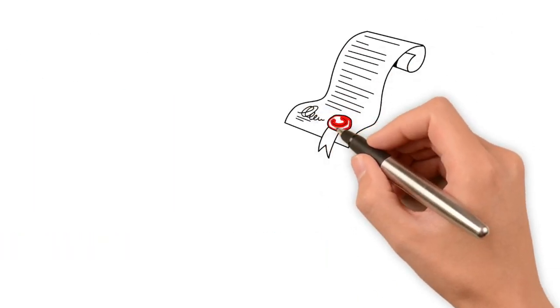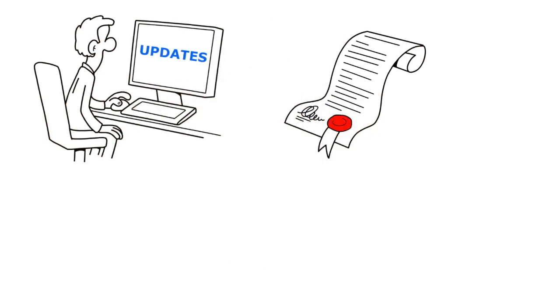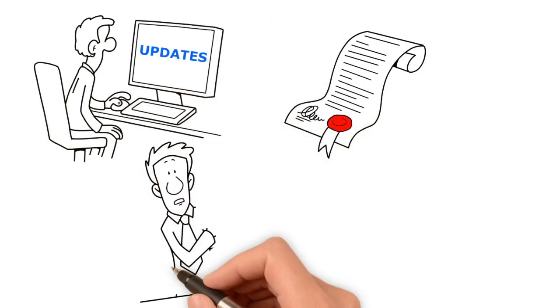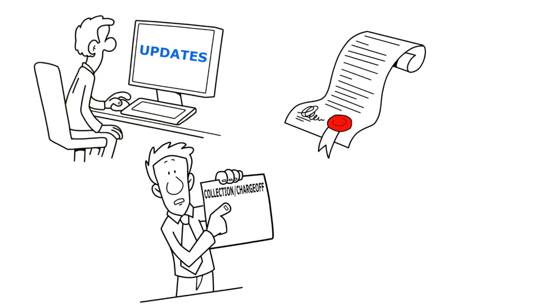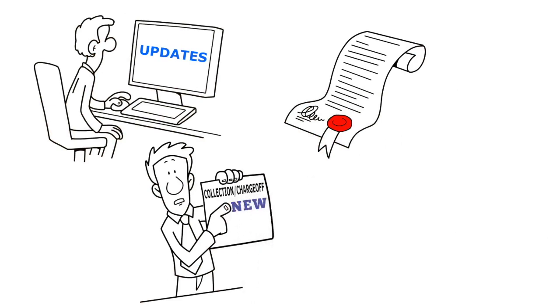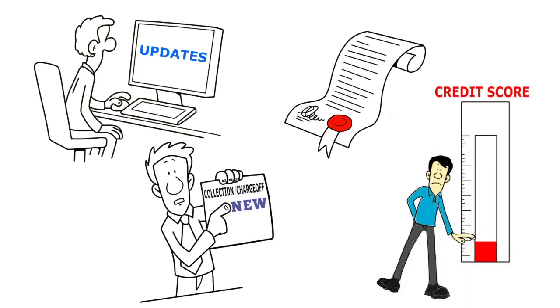Even though the law states otherwise, these updates to your credit report can often update the data in such a way that your credit score believes that the collection or charge off is much newer than it is, and unfortunately your score ends up dropping as a result.